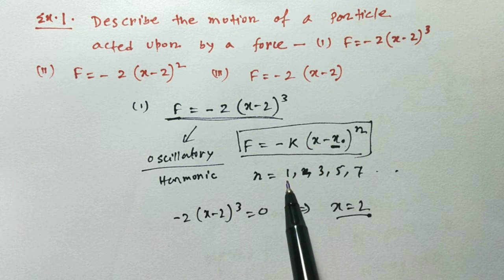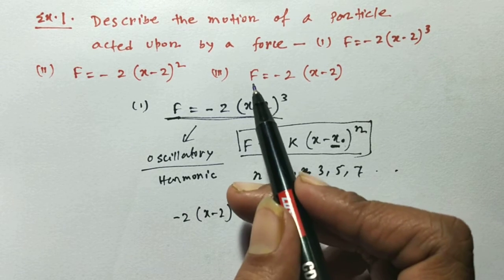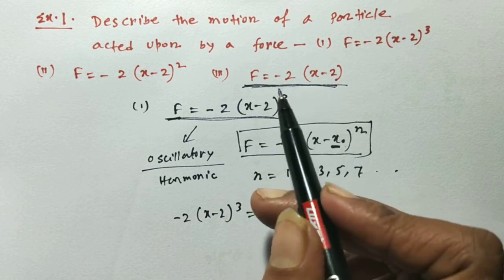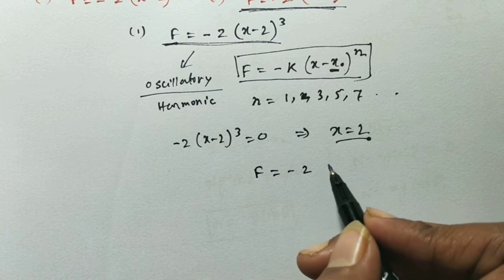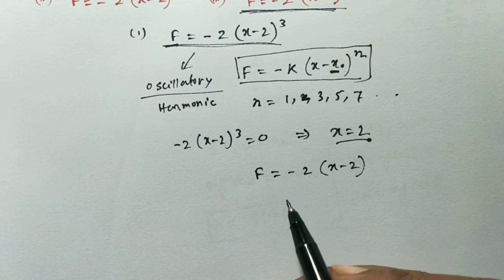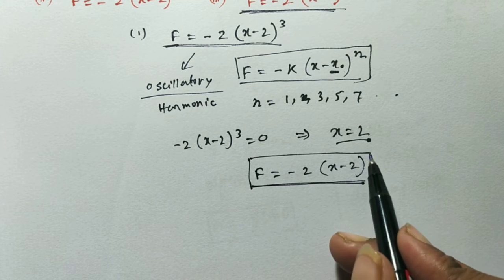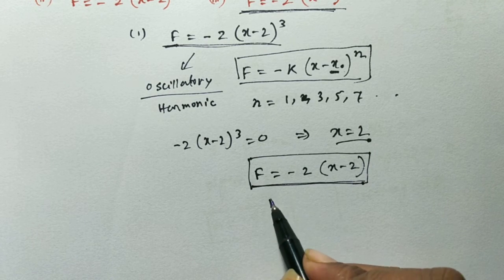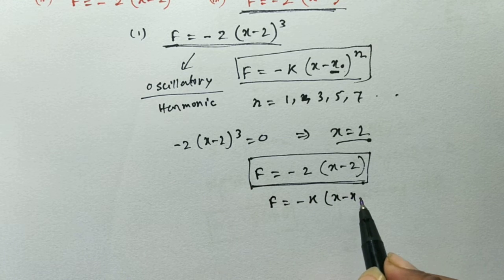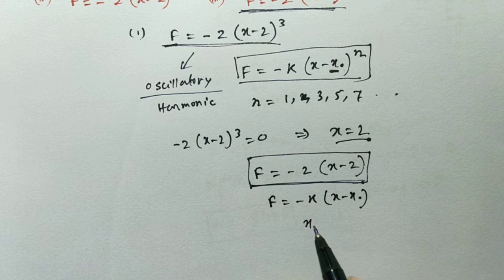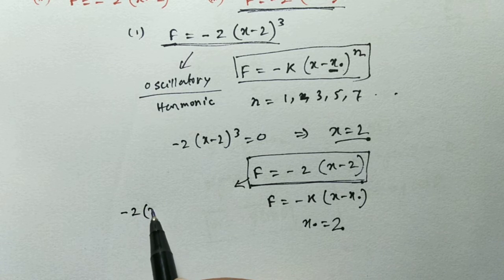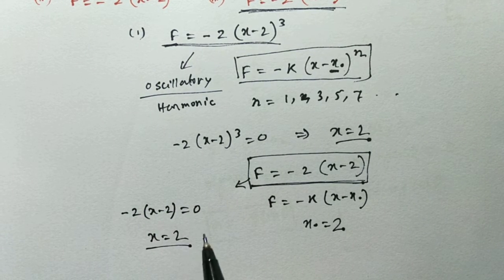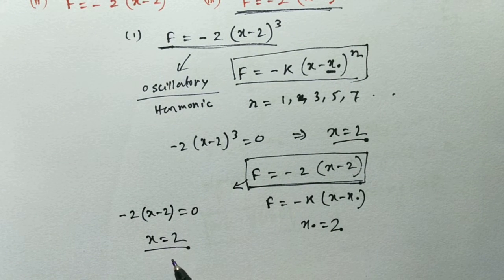For the third force, F equals minus 2 into (x minus 2), this is actually simple harmonic motion because it is equivalent to F equals minus k into (x minus x naught), where n equals 1. The stable equilibrium point is x naught equals 2. If we put F equals 0, we get minus 2 into (x minus 2) equals 0, giving x equals 2. So the simple harmonic motion occurs about the stable equilibrium point x equals 2.